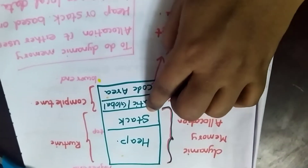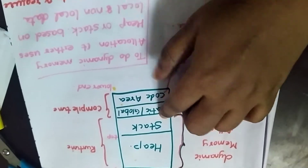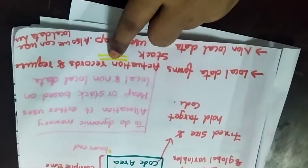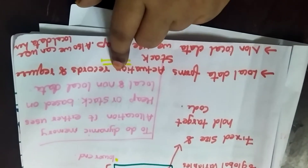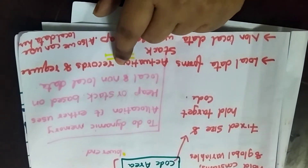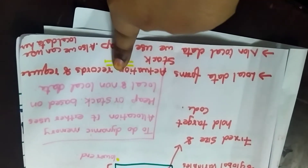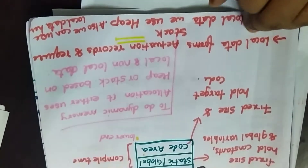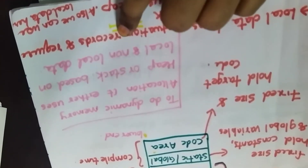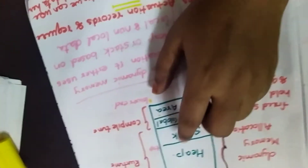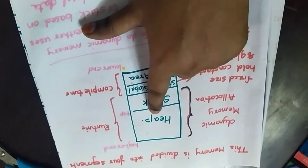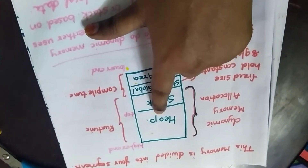Local data is managed by the stack and non-local data is managed by the heap. Local data is managed through the use of activation records — this is very important. This can come for two marks or four marks, and the whole answer is dependent on the activation record. The non-local data uses the heap, which is a larger version and uses local as well as non-local data.